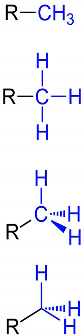Methyl cation. The methylium cation, CH3+, exists in the gas phase but is otherwise not encountered. Some compounds are considered to be sources of the CH3+ cation, and this simplification is used pervasively in organic chemistry.